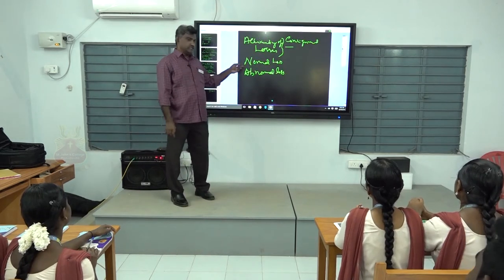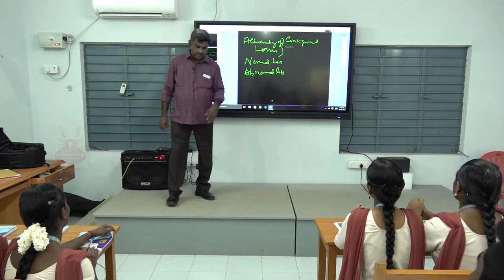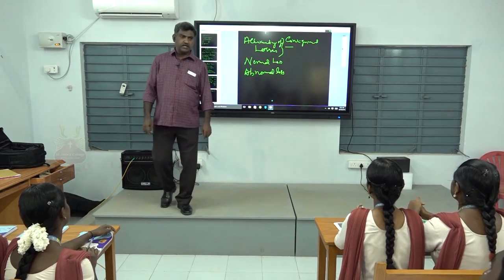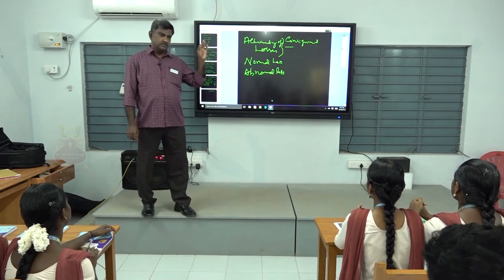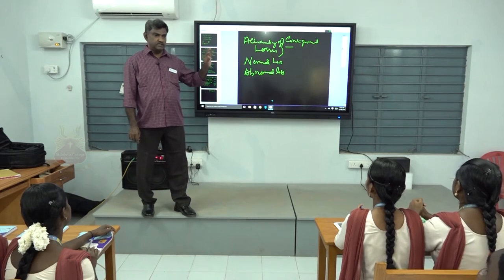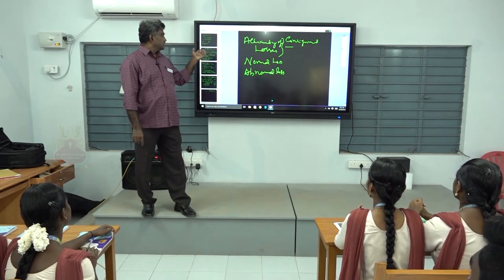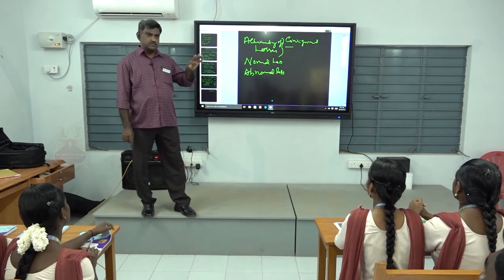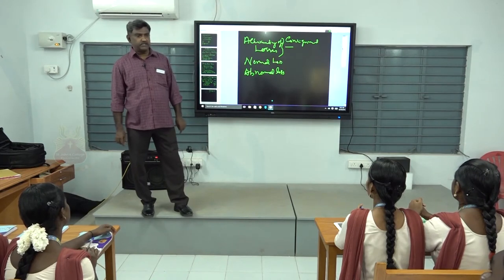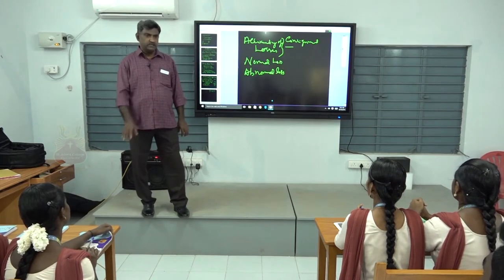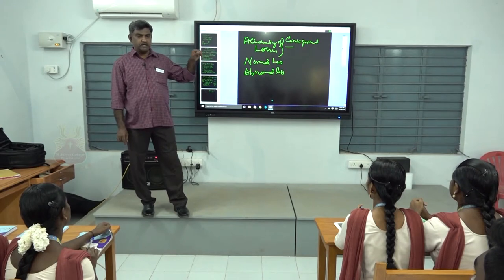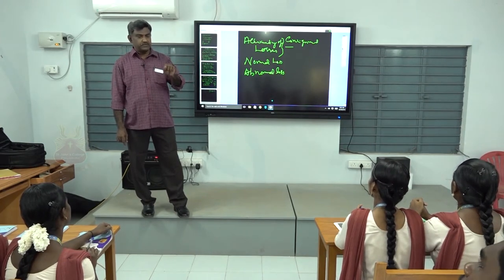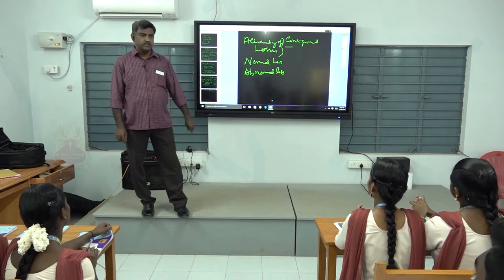Losses in consignment are divided into two: normal loss and abnormal loss. Normal loss is a loss that cannot be avoided in transactions, as it depends on the nature of the goods. Whatever precautions are taken by the consignor or consignee, this loss cannot be avoided. Normal loss is not recorded in the books of the consignor or consignee; instead, prices are inflated for the remaining goods.